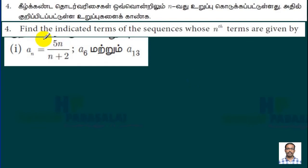Now we are going to discuss problem number four from exercise 2.4. Find the indicated terms of the sequences whose nth terms are given by: (i) aₙ = 5n/(n+2), find a₆ and a₁₃.